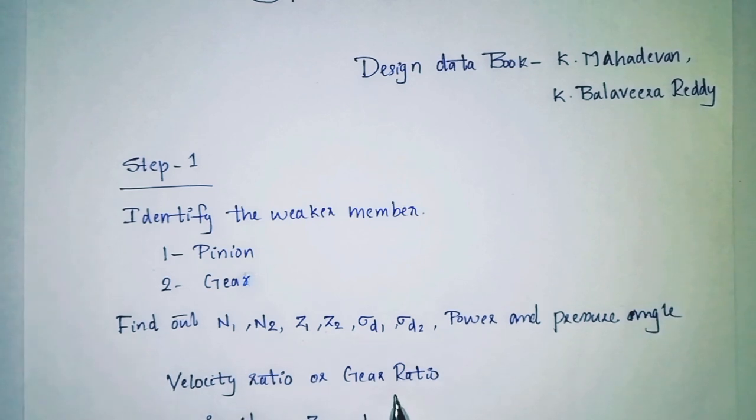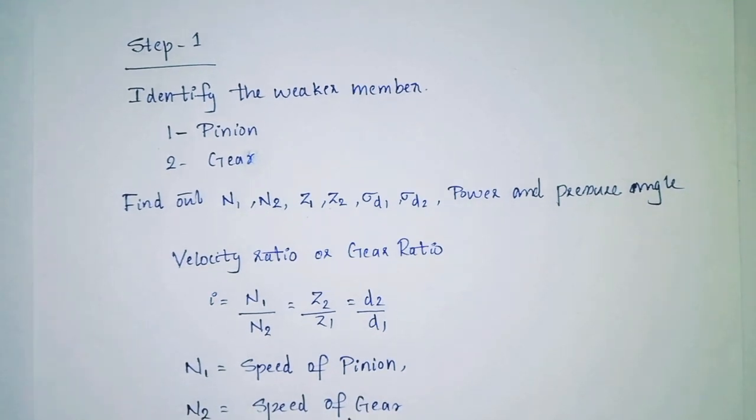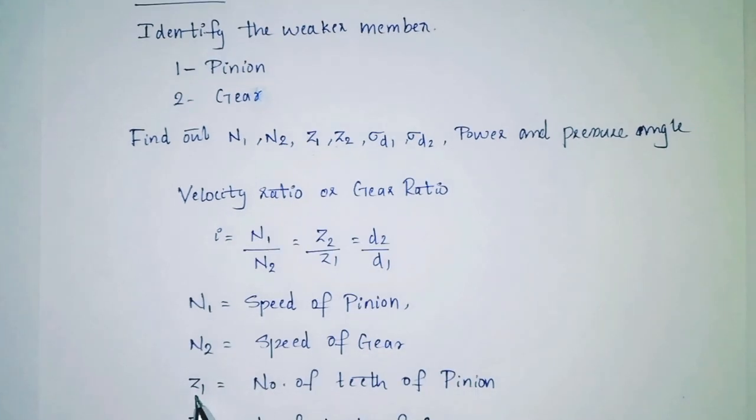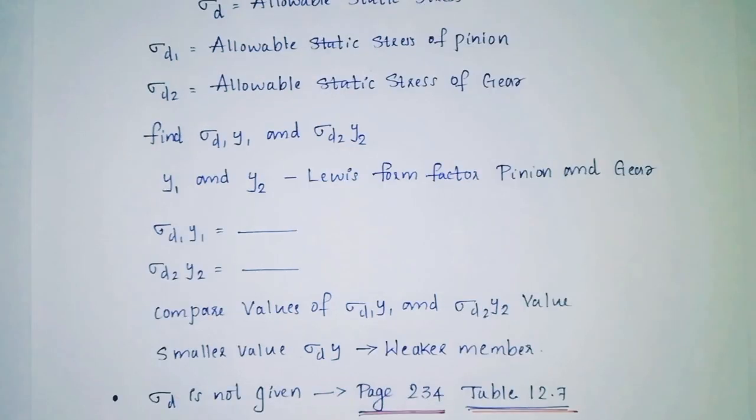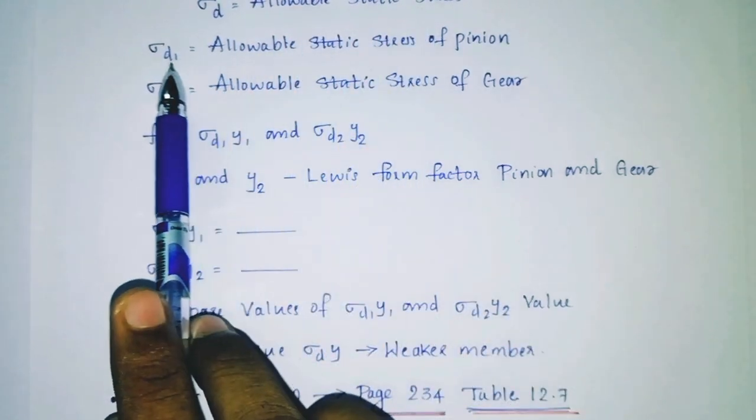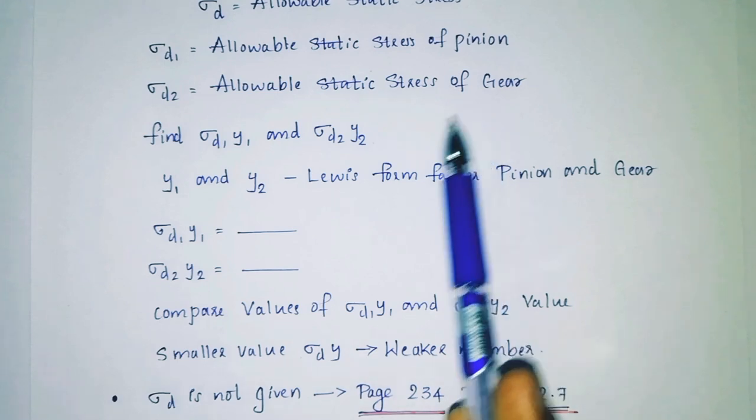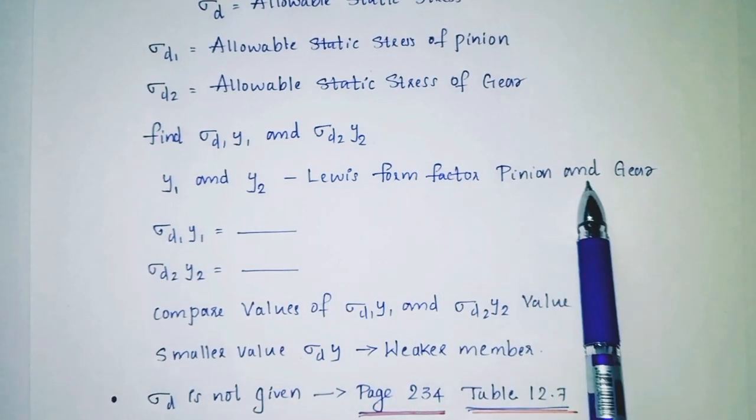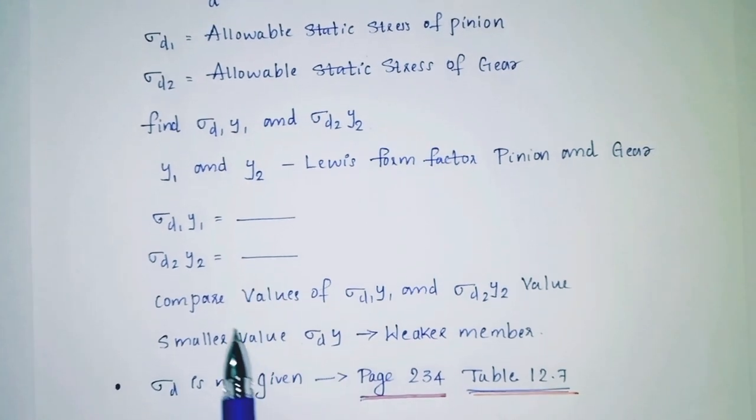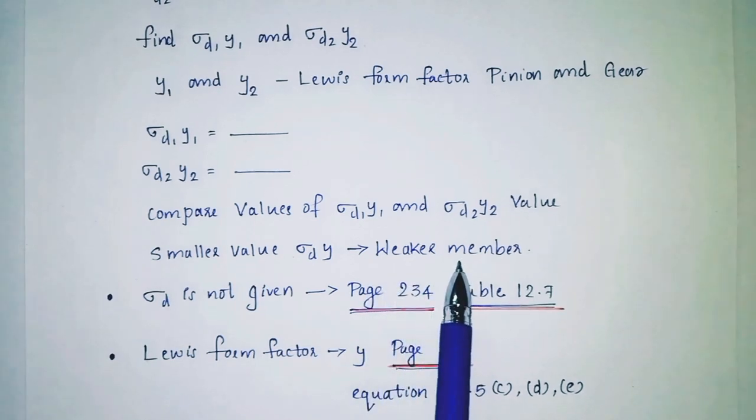Find velocity ratio or gear ratio i equal to n1 by n2 equal to z2 by z1 equal to d2 by d1, where n1 is speed of pinion, n2 is speed of gear, z1 is number of teeth of pinion. Find sigma d1 allowable static stress of pinion and sigma d2 allowable static stress of gear. We will find sigma d1 y1 and sigma d2 y2 where y1 and y2 are Lewis form factor for pinion and gear. Compare values and find the smaller value sigma d1.